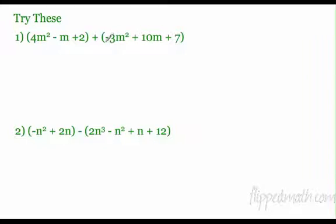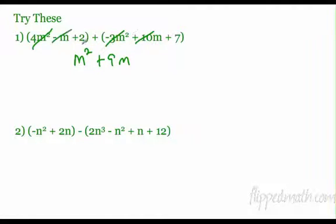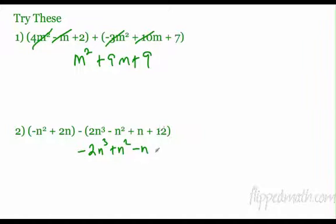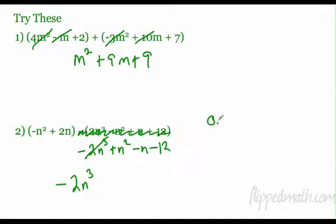Hopefully you paused and tried it. Let's do it: 4m squared plus negative 3m squared — four plus negative three is one m squared, or just m squared. Then negative 1m plus 10m is 9m. Then two plus seven is nine — so m squared plus 9m plus 9. Down here, I'm going to distribute first: negative 2n to the third stays, negative one times negative one is positive n squared, negative one times one is negative n, negative one times 12 is negative 12. Now combine like terms: negative 2n to the third is first. Then negative n squared plus n squared is zero — I don't write it, it cancels. Then 2n minus 1n is positive n. Then minus 12.